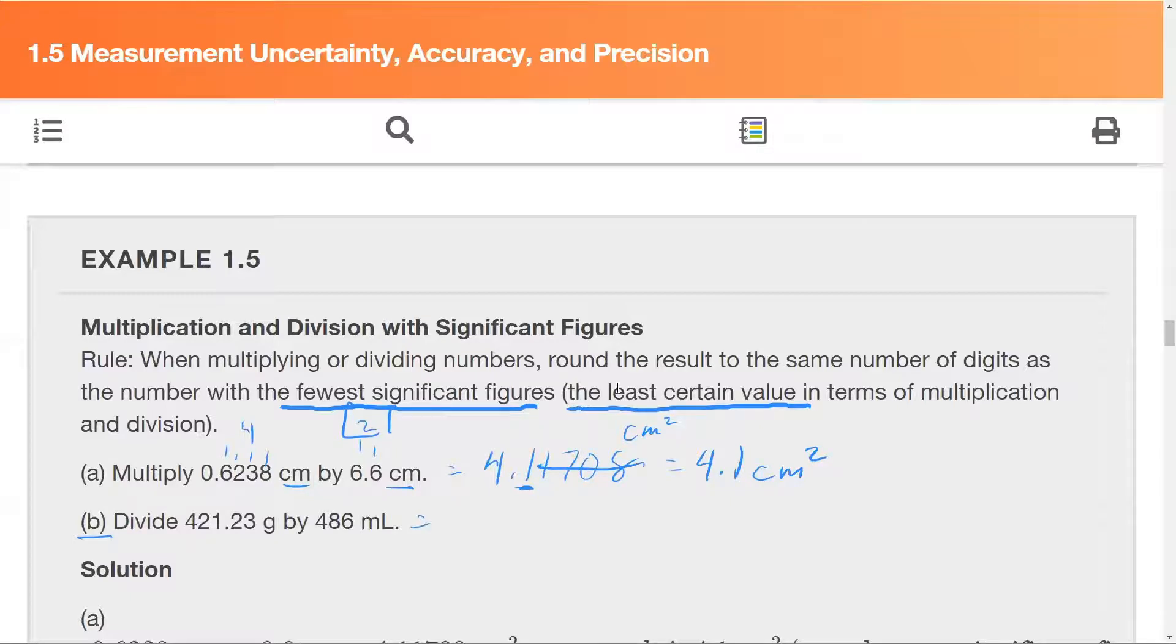So when we have 421.23 grams divided by 486 milliliters, let's count these. One, two, three, six figures. Significant figures. One, two, three, four, five significant figures.